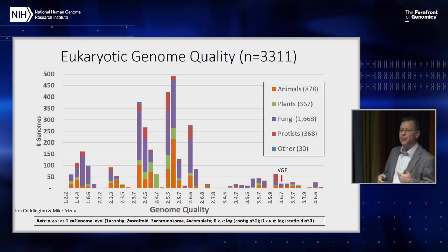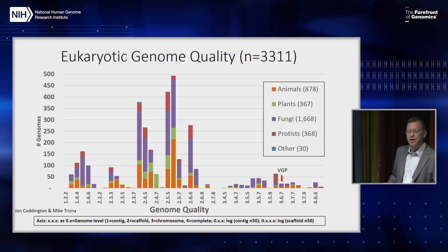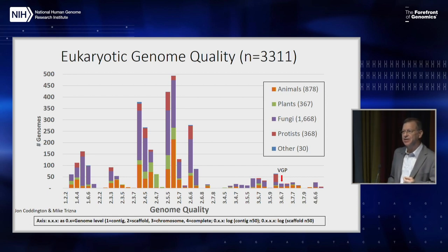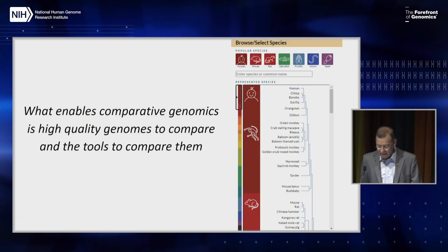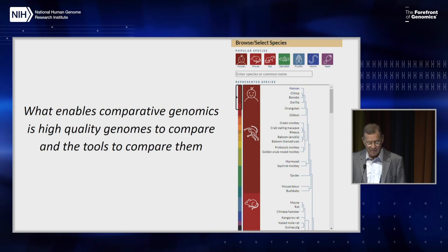As we move through the next two days, we need to ask ourselves: do we produce reference genomes to ask a specific biological question, or do we produce reference genomes to ask those questions and, in addition, questions we haven't even thought of yet? I'll argue that we should do the latter — do the best we can now, do it once, and you don't have to do it again. What enables comparative genomics is high-quality genomes to compare and the tools to compare them.